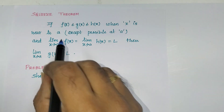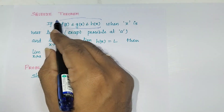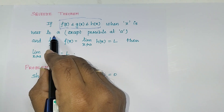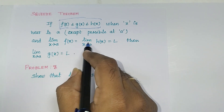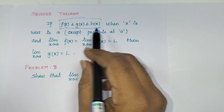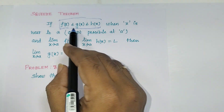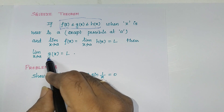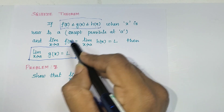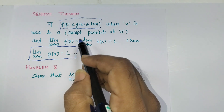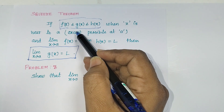First, let's see what the Squeeze theorem is. If f(x) ≤ g(x) ≤ h(x) when x is near a, except possibly at a, and the limit as x tends to a of f(x) equals the limit as x tends to a of h(x) equals L, then no need to find g(x) separately — we can simply write: limit as x tends to a of g(x) equals L. That is the Squeeze theorem, also known as the Sandwich theorem.